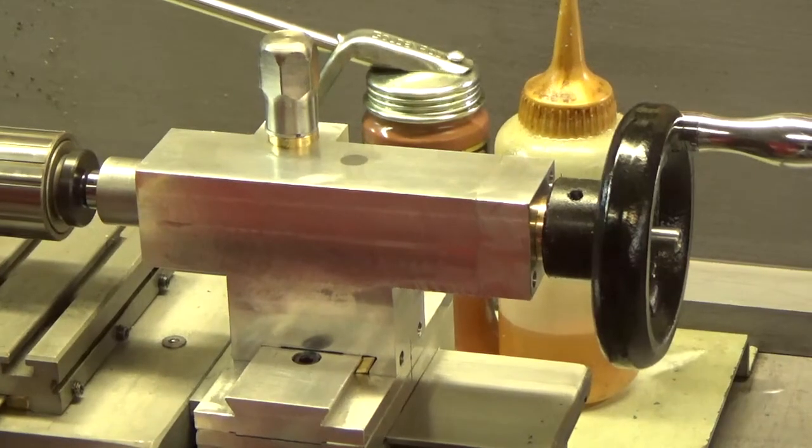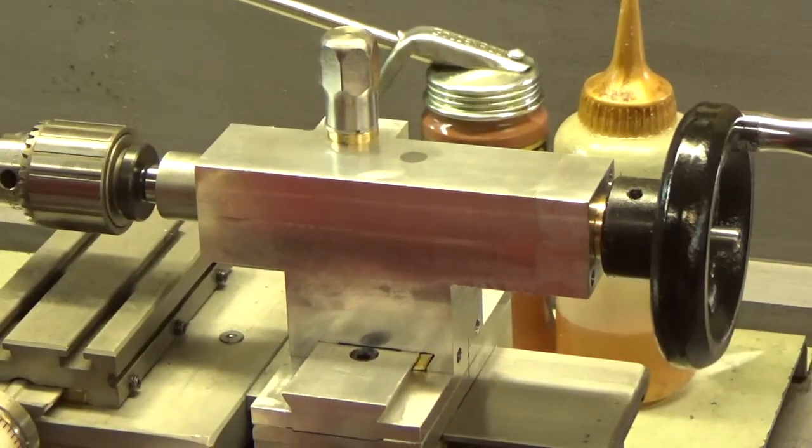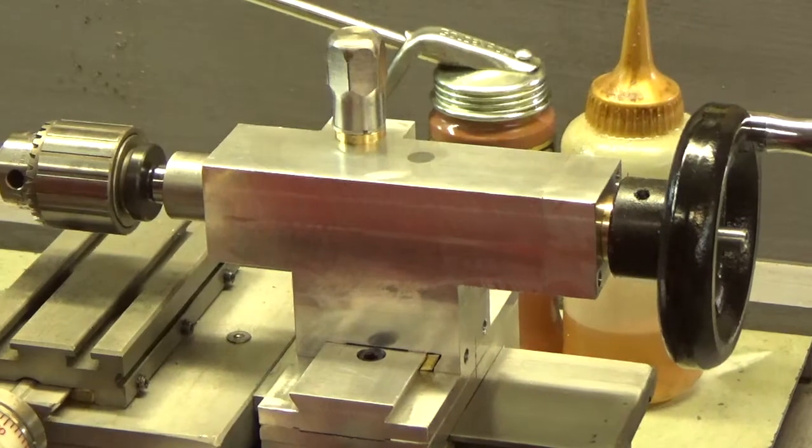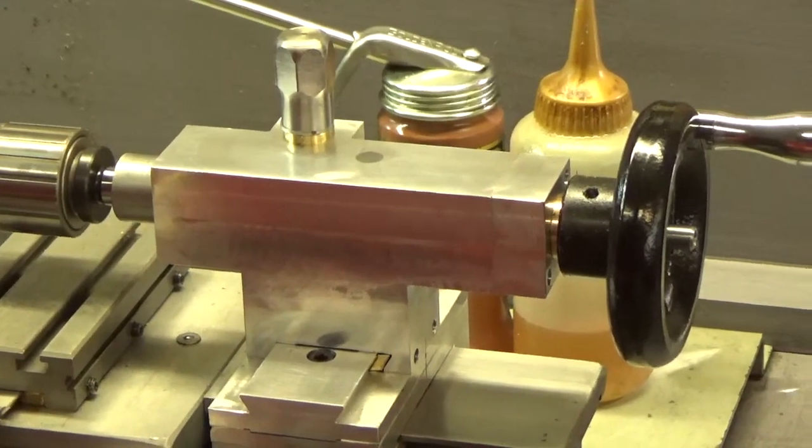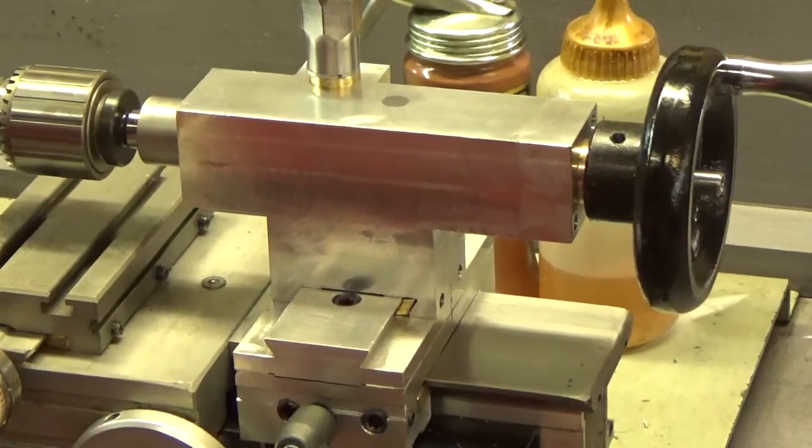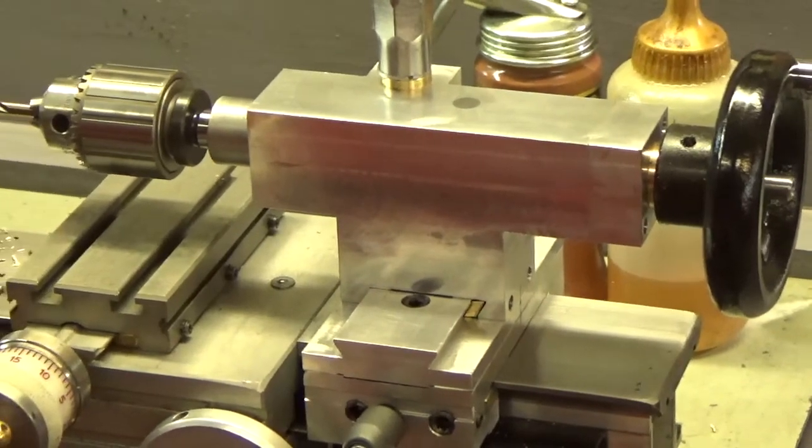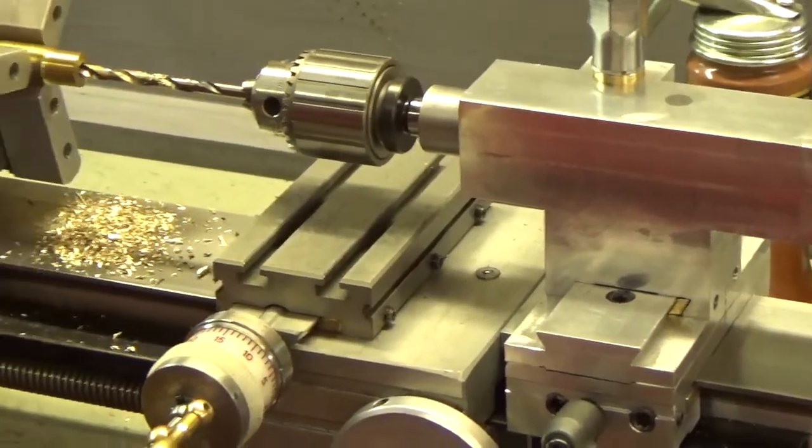I think once I get all the corners beveled and stuff on the tailstock it will look a lot better. It might be a little large looking for the size of the lathe, I don't know, but it's okay, serves the purpose. Boy does it work nice too.